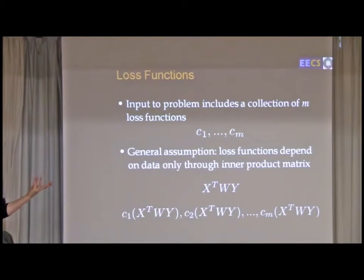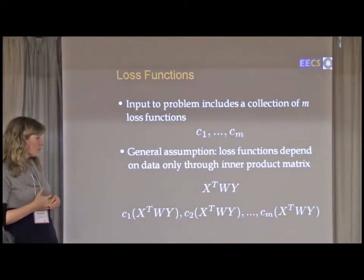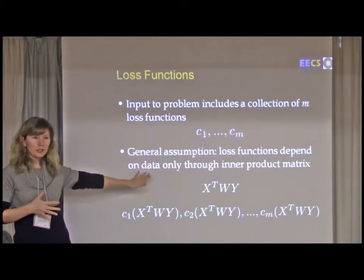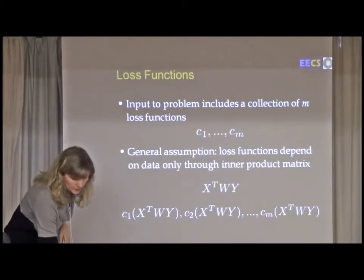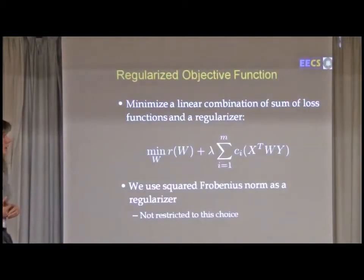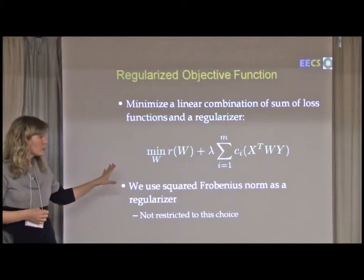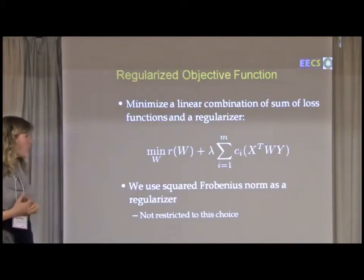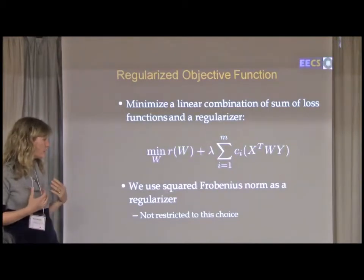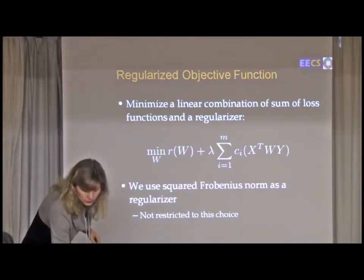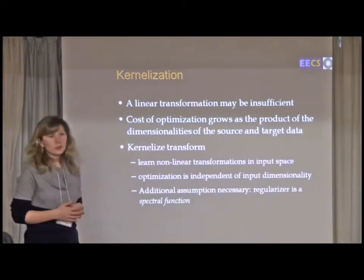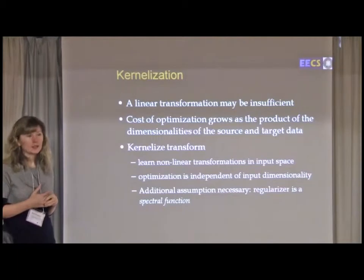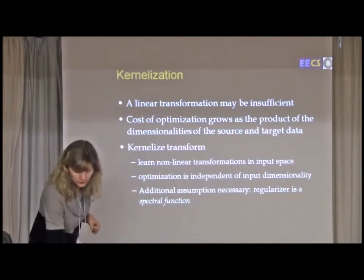So our input is a set of these constraints. We are going to assume that the loss functions in general will depend on just the inner product matrix, where capital X is all the training features in the source and capital Y is all the target features. Our objective function is to minimize loss plus some form of regularization on W. We're going to use essentially a Frobenius norm on W. We'd like to learn nonlinear transformations, and it's actually possible to kernelize this.